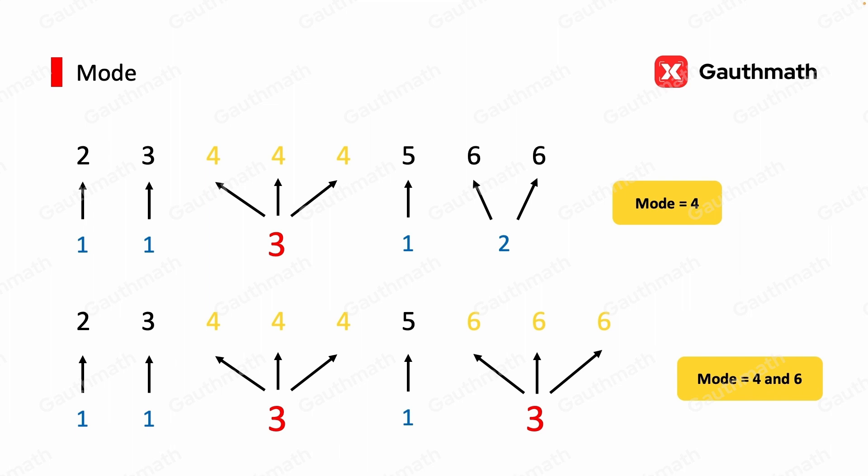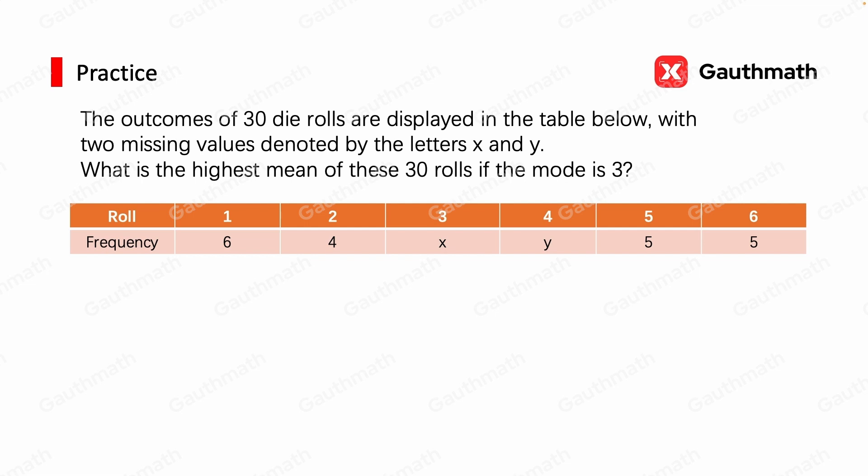Now we know what the mode is, let's try out an exercise. The outcomes of 30 die rolls are displayed in the table below with two missing values denoted by the letters x and y. What is the highest mean of these 30 rolls if the mode is 3?